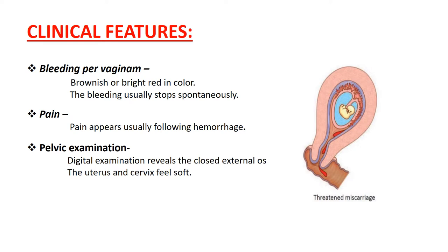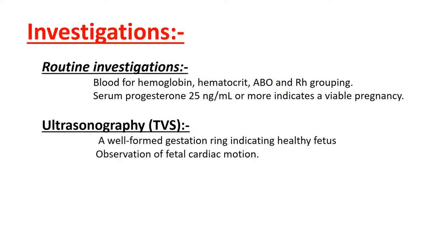The uterus and cervix feel soft. Pelvic examination is avoided when ultrasound (USG) is available. Investigations include blood for hemoglobin, hematocrit, ABO, and RH grouping. Anti-D gamma globulin should be given to RH-negative non-immunized women. Serum progesterone of 25 ng/mL or more indicates a viable pregnancy. Transvaginal sonography (TVS) findings may show a well-formed gestational ring with central echoes from the embryo indicating a healthy fetus, and observation of fetal cardiac motion — with this, there is a 28% chance of continuation of pregnancy.